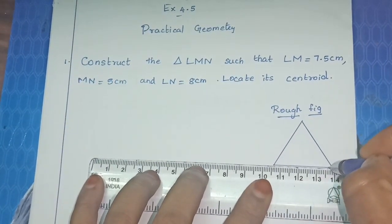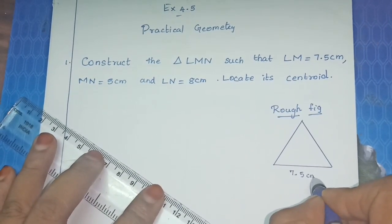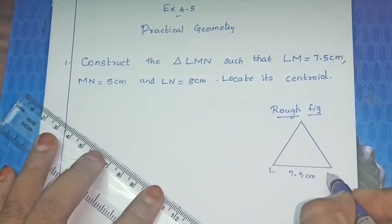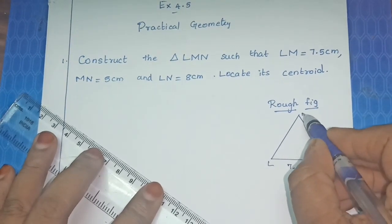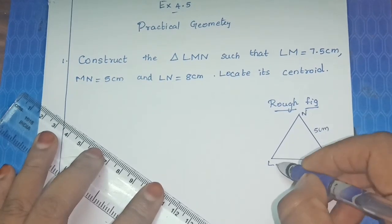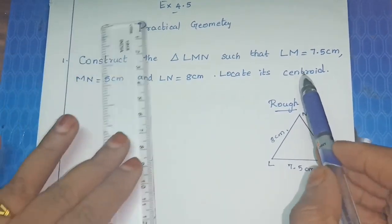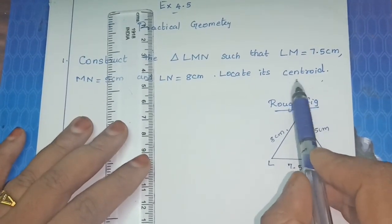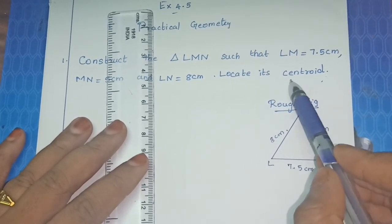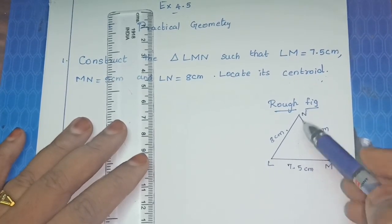In the measurements, I am going to mark the triangle. I am taking LM as the base, so LM is 7.5 cm. LM is 7.5, MN is 5 cm, and LN is 8 cm. The centroid is the meeting point of all the medians of the triangle — that is, all the medians meet at one point, and that point is called the centroid.